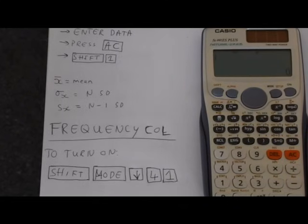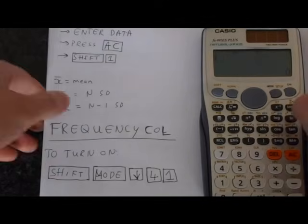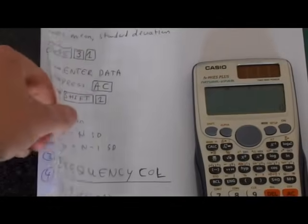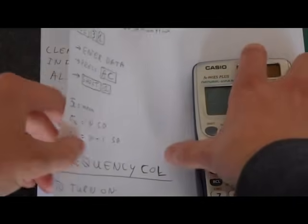instead of entering all of that, you could just put 2 in the frequency column for 5 because you've got 5 twice. That would save you entering another line. But if you had 5 twelve times, rather than typing 5 out 12 times, you would just put 12 in a frequency column.